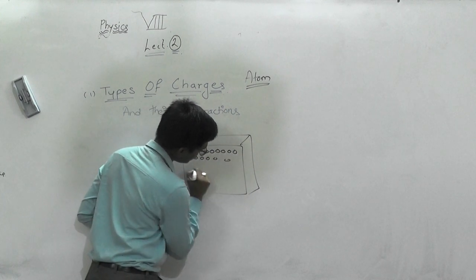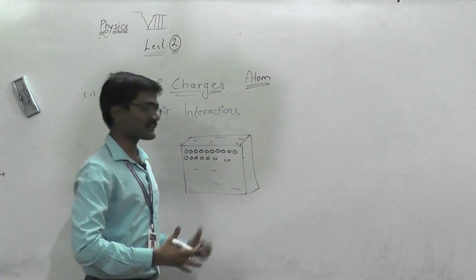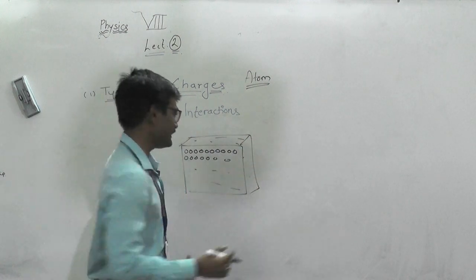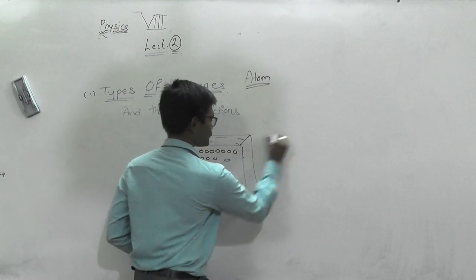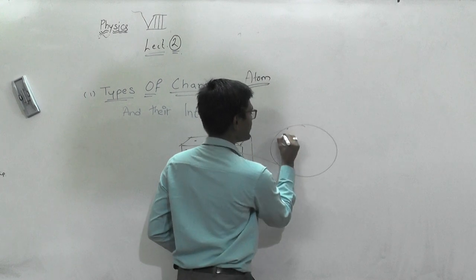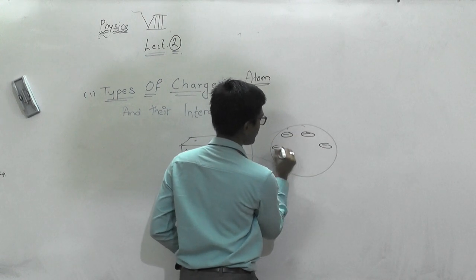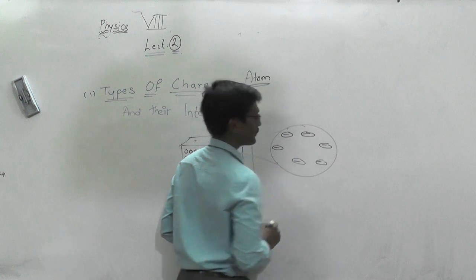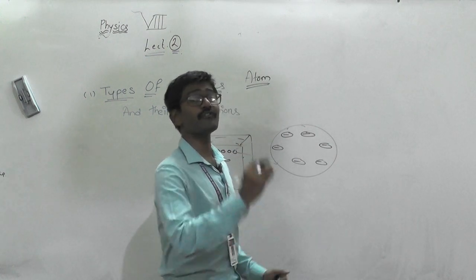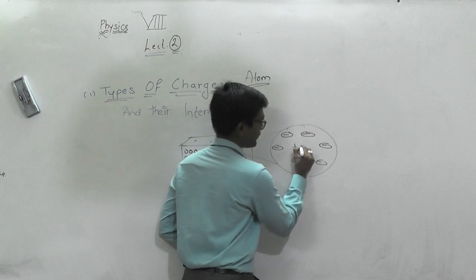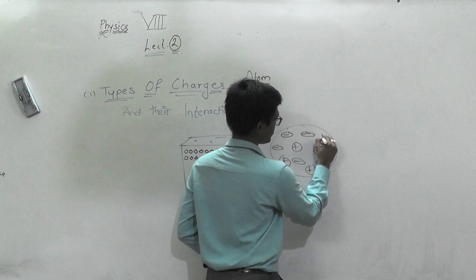Each of these atoms — when filled up compactly, it forms a solid. Now, if you zoom into each atom, it is made up of a number of electrons and an equal number of protons.